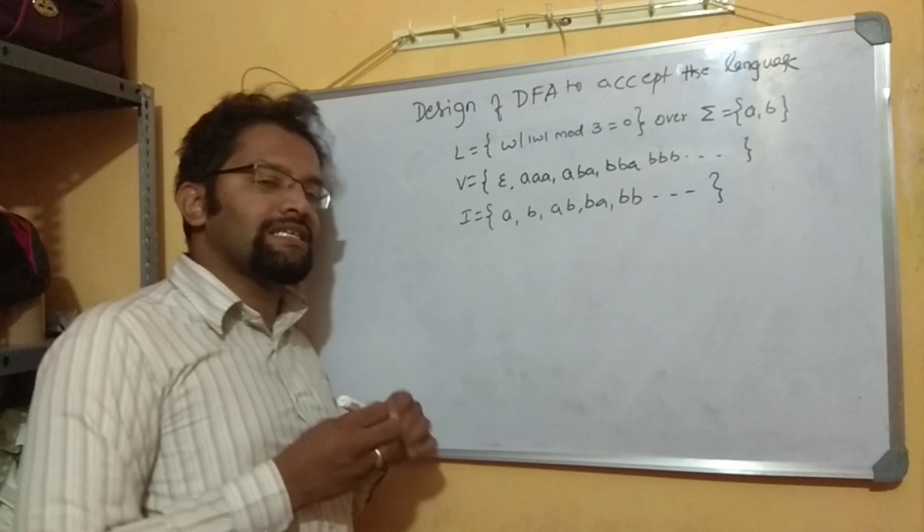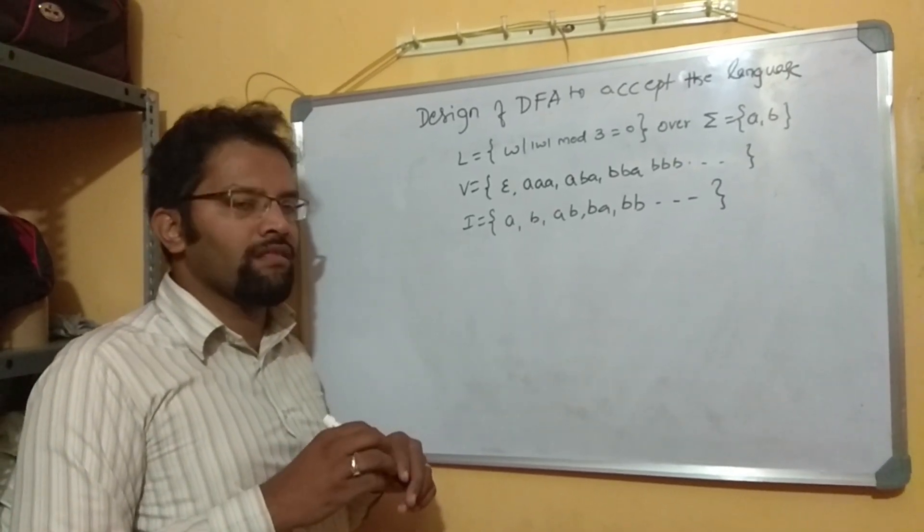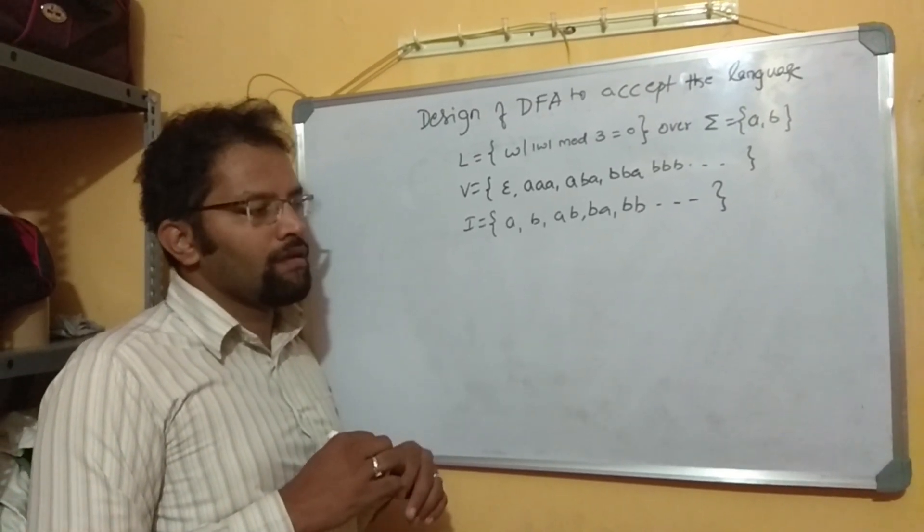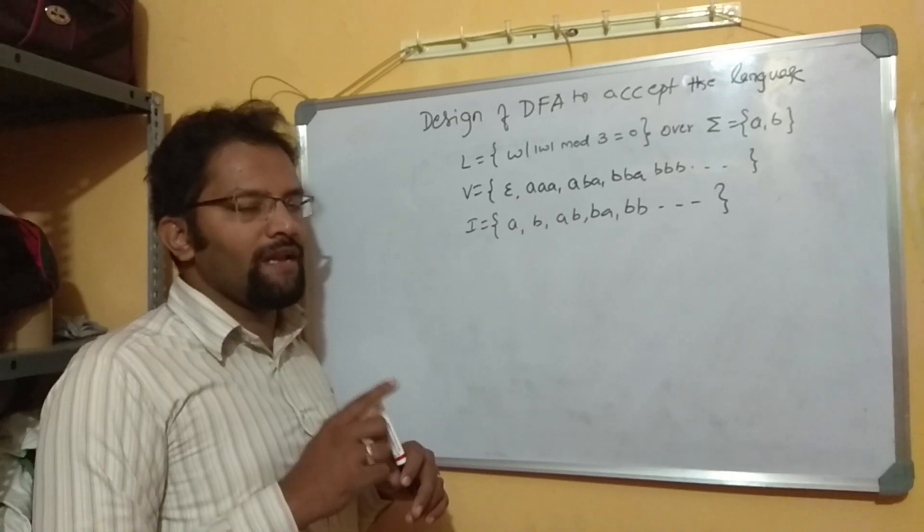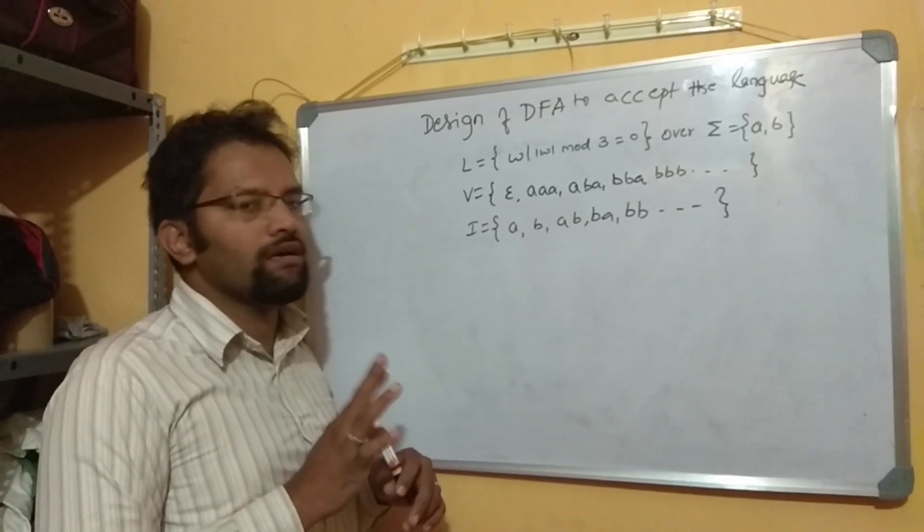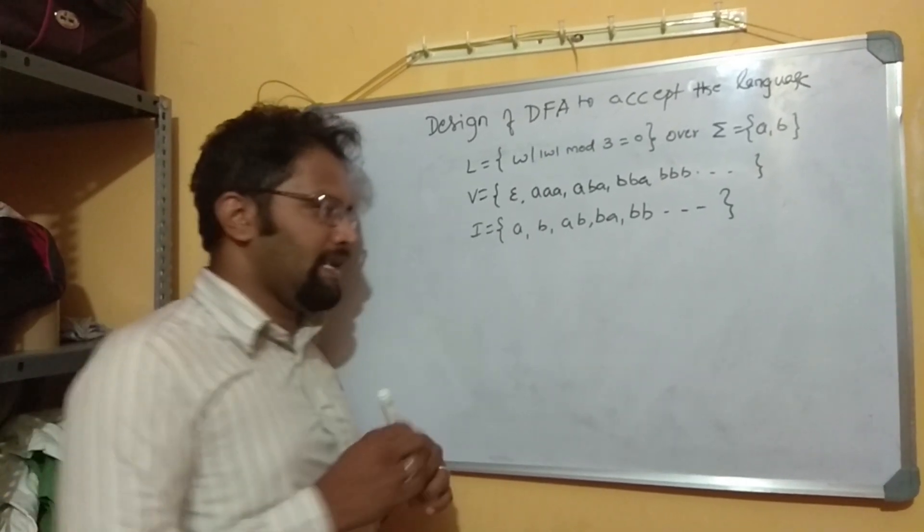And here, we cannot use a theory which we discussed in earlier examples where we had discussed that number of states could be one more than number of symbols in a minimum string. That statement is not applicable here. So, now how do I fix length? Let me discuss.